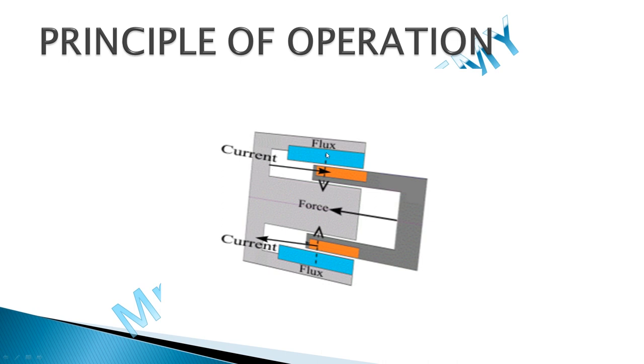If I apply Fleming's left hand rule, current, index finger flux, thumb shows the direction towards left. Similarly, same over here also. The current direction is reversed because flux direction is also reversed. Here also it's showing towards left, then it will move towards left direction.